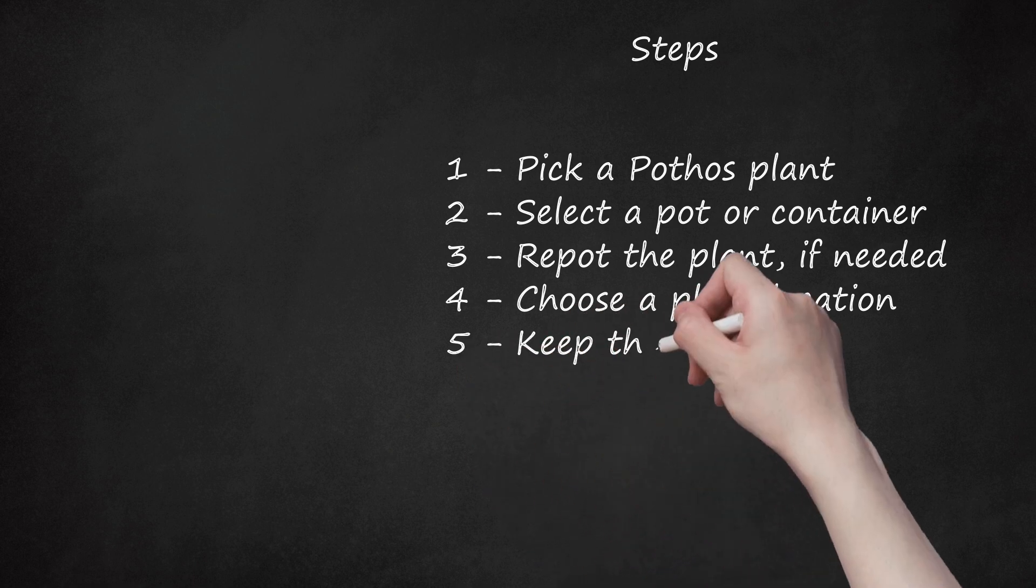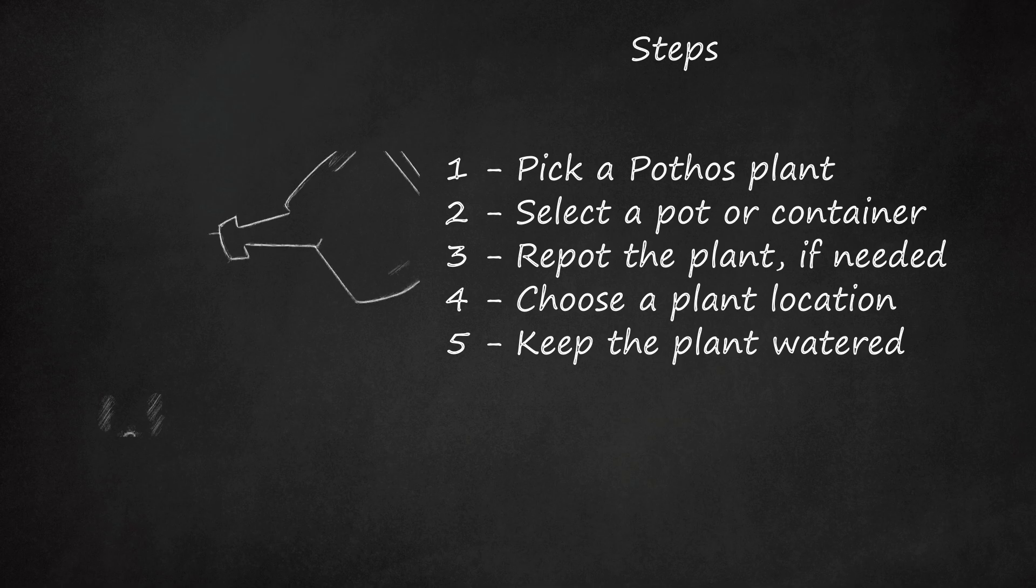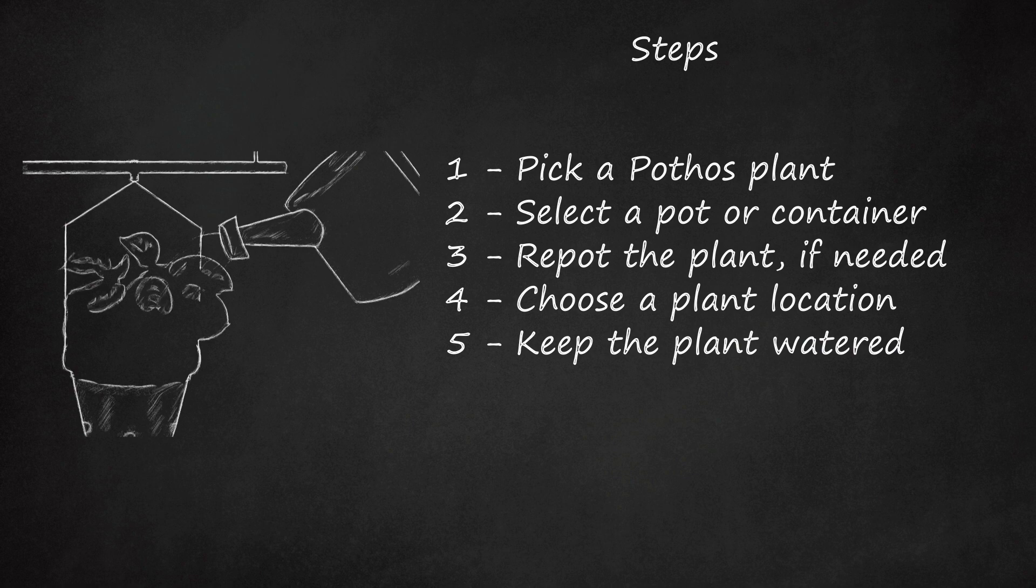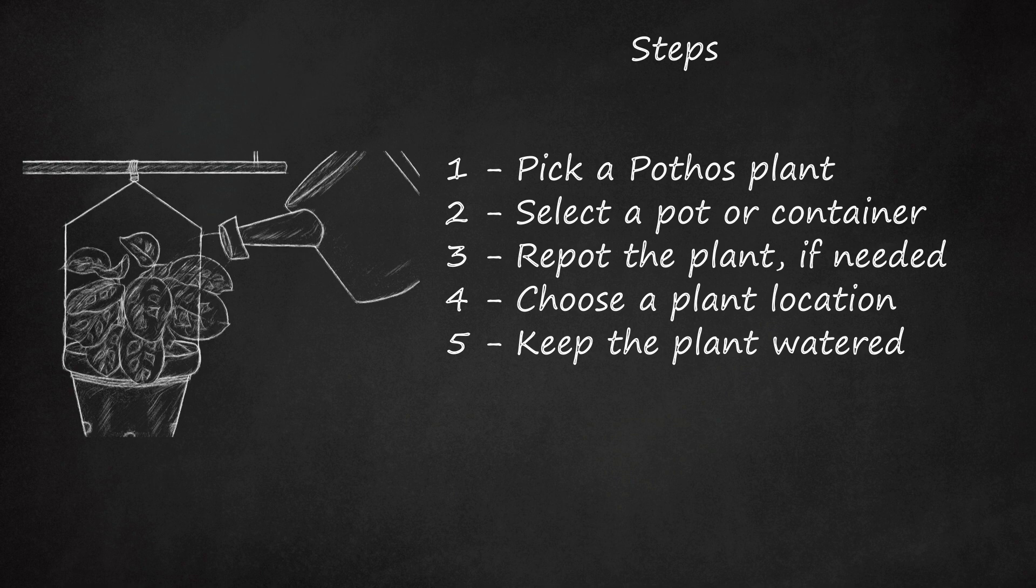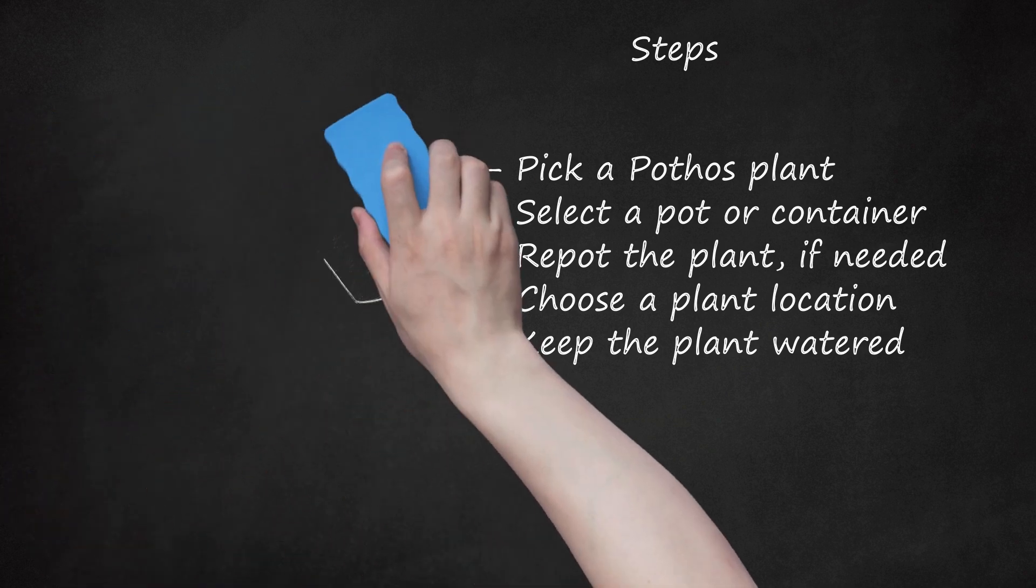Step 5: Keep the plant watered. Pothos plants need the soil to be just damp, not soaking. When you touch the soil with your finger, your finger should have dirt clinging to it, but not have water on it. If there is no clinging, water it. If your finger is wet, hold off.